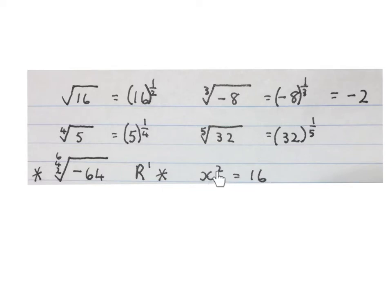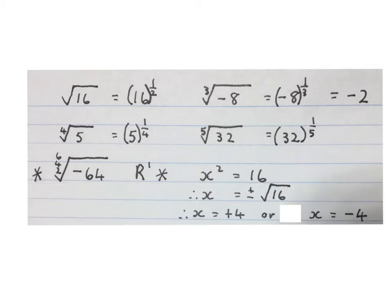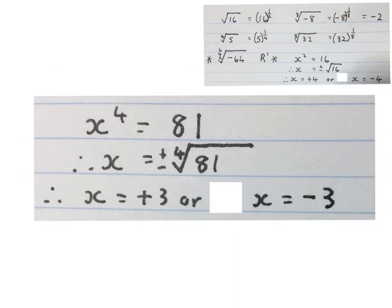Next, if you have an x with an even number in the air and you have to solve for x, you will square root both sides and you will get two answers: x equals plus 4, or x equals minus 4. So if you have a 2, a 4, or a 6 as an exponent and you have to solve for x, you always get two answers — provided this number is positive. Please stop the video and see if you understand this.